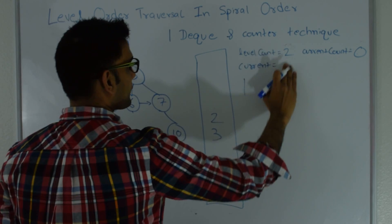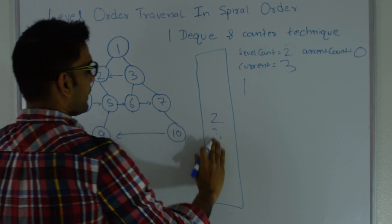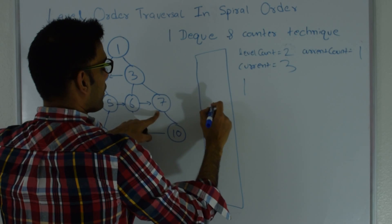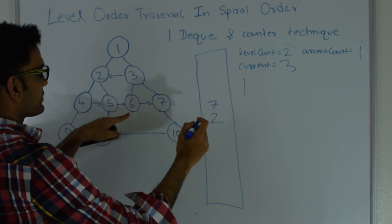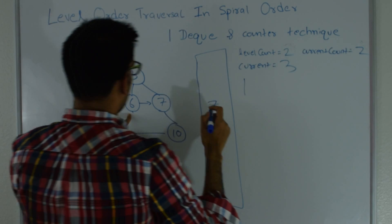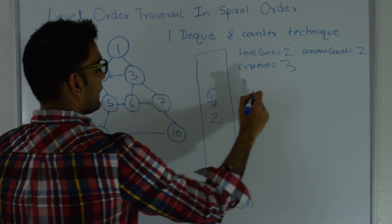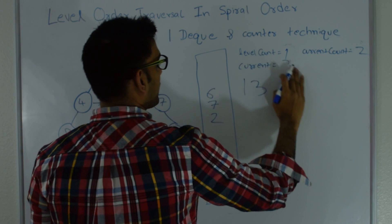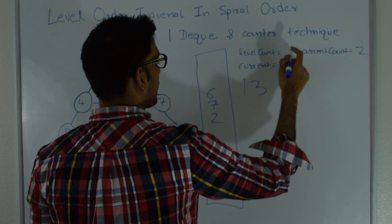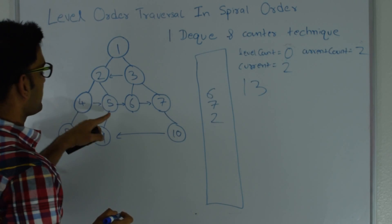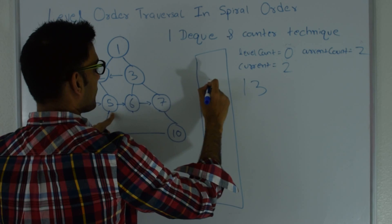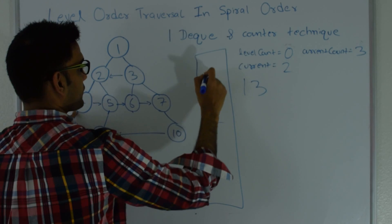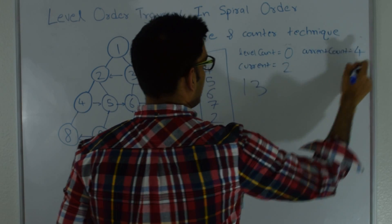I pop 3 from the bottom — current becomes 3. 3 has a right child so I increment current count by 1 and put it at the top of the queue. 3 has a left child so I increment current count to 2 and put it at the top, then print 3. I decrement level count by 1 and pop again from the bottom — current becomes 2. Level count becomes 0. 2 has a right child and a left child, both added to the top of the queue; current count becomes 4, and I print 2.